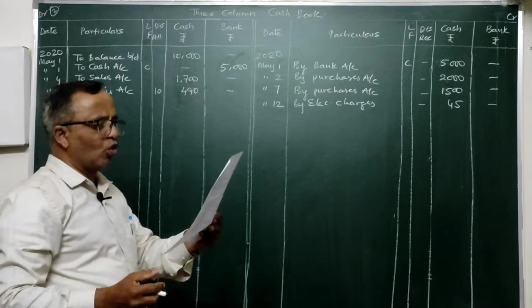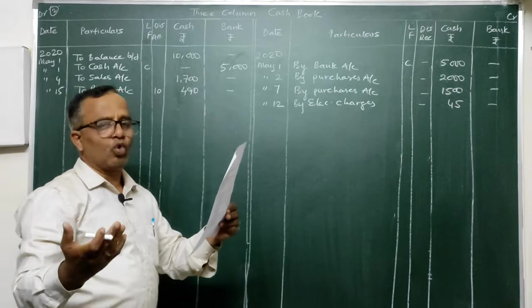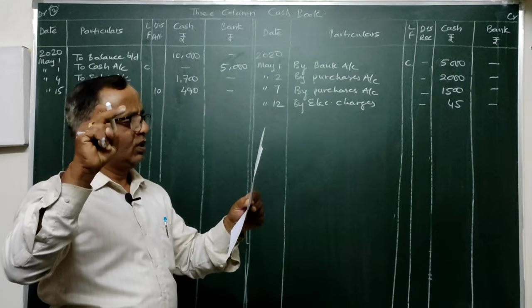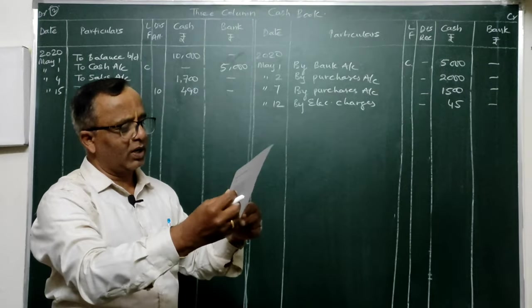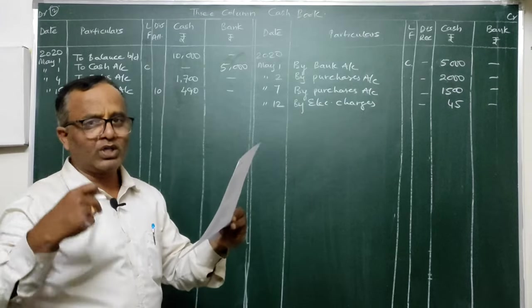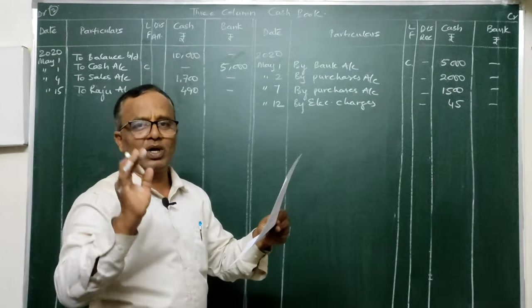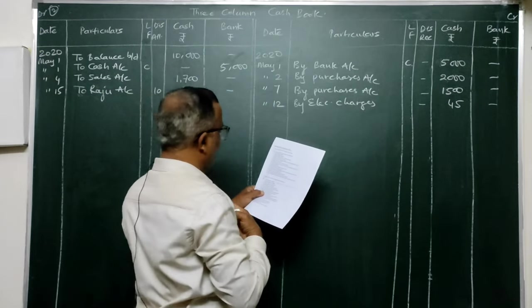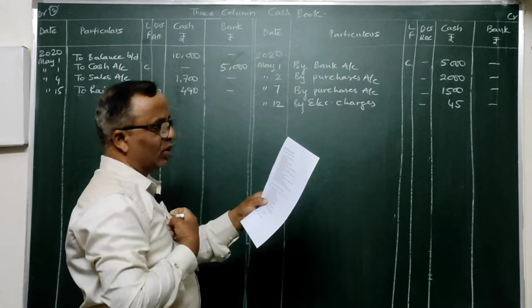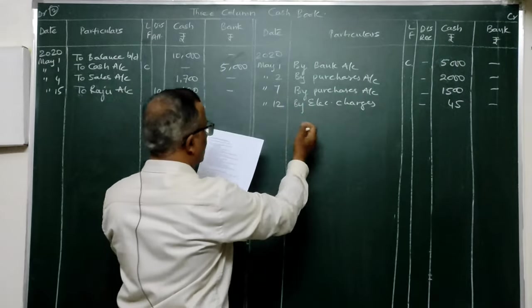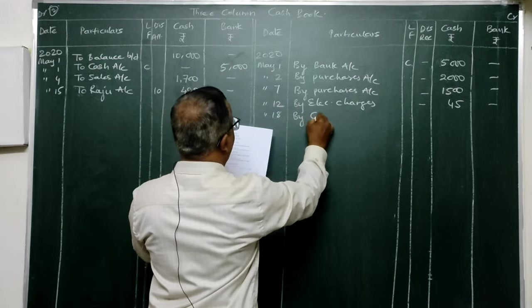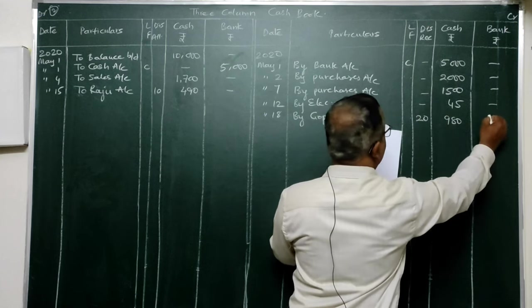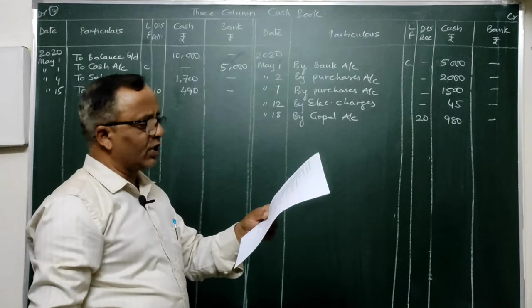On the 18th: paid to Gopal 980 in full settlement. Earlier on the 10th, goods worth 1,000 were purchased on credit from Gopal. Paying 980 means Gopal allowed 20 rupees discount — from our side, discount received. Entry: Gopal Account Dr. To Cash, To Discount Received. Post 'By Gopal' on credit side — 980 in cash column, 20 in discount received column.